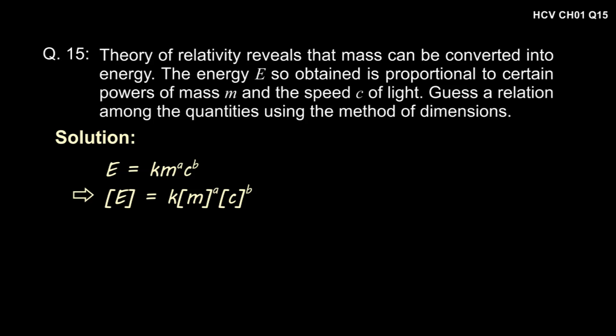Therefore, the dimension of energy must be equal to K into dimension of mass to the power A into dimension of C to the power B. We know that dimension of energy is M L square T to the power minus 2 and dimension of C that is speed of light is L T to the power minus 1 and K is dimensionless quantity therefore we don't have to take its dimension.